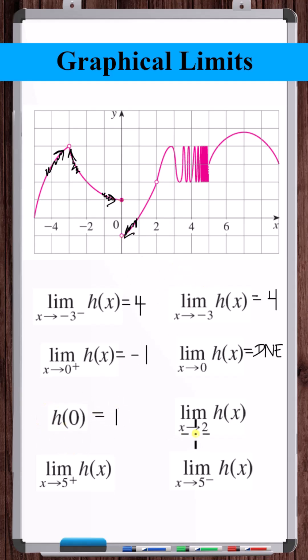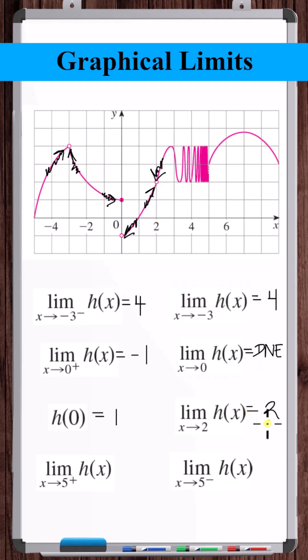The limit as x approaches 2 in general: coming from the left the function is approaching 2, and coming from the right the function is also approaching 2. So this limit is 2.